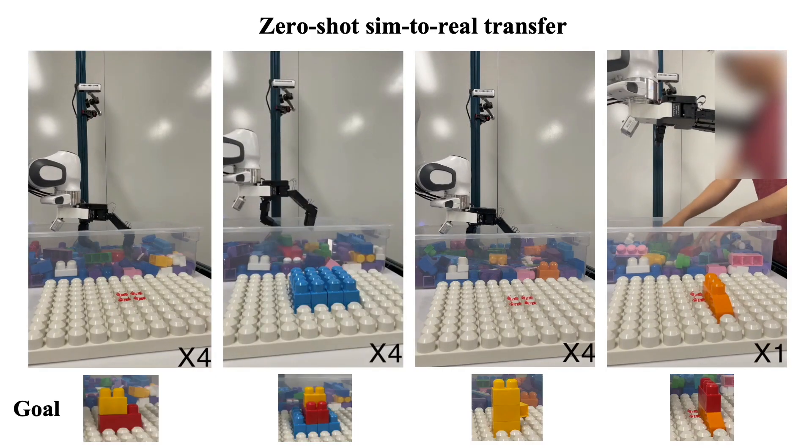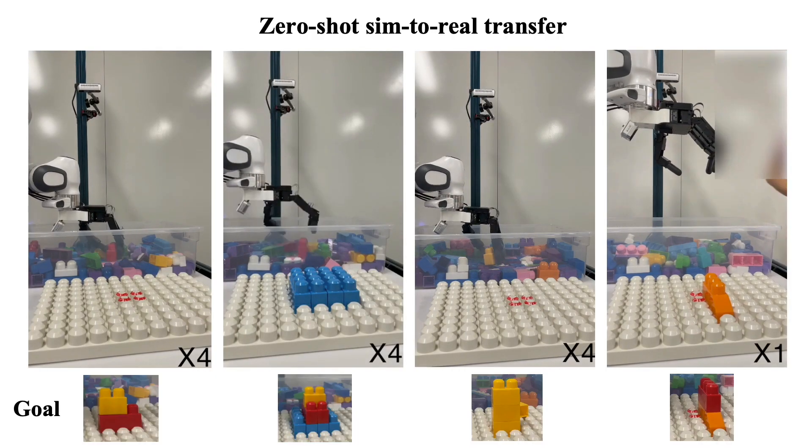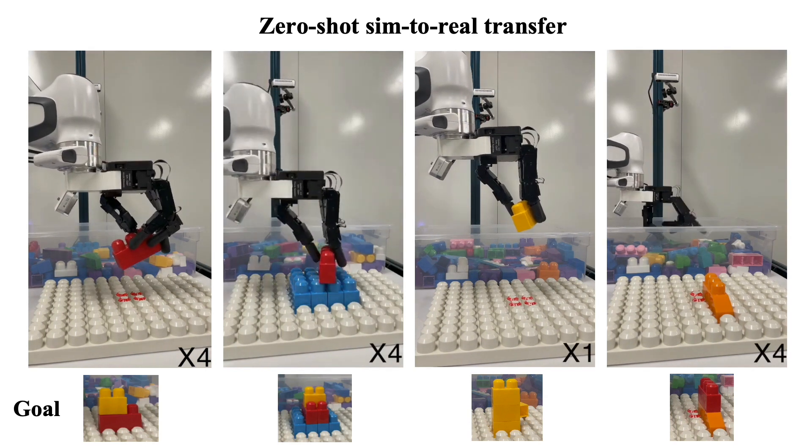Our system is able to zero-shot transfer to a real-world dexterous robot. Here, we demonstrate the system building four different structures.